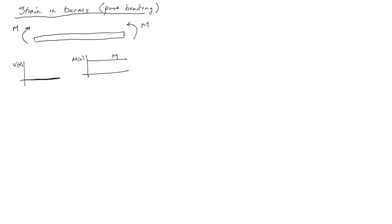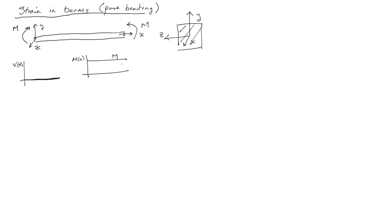The coordinate system is going to be like this: the y-axis runs vertically, the x-axis runs through the centroid of the beam, and the z-axis comes out of the board. If you look at a cross section, y and z are in plane and x is out of the board. This idea of pure bending is a little bit contrived, but it allows us to come up with a very clean definition for strain in beam bending.